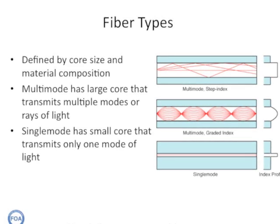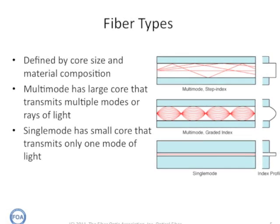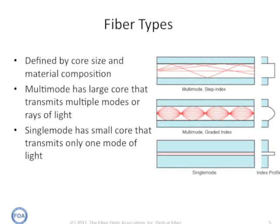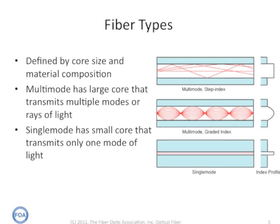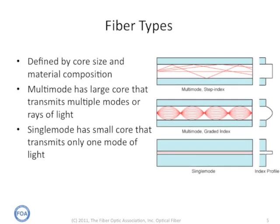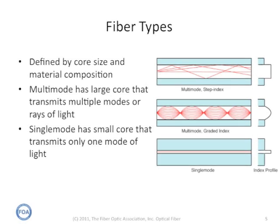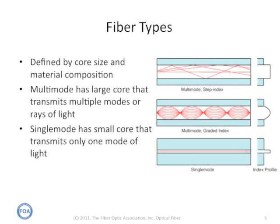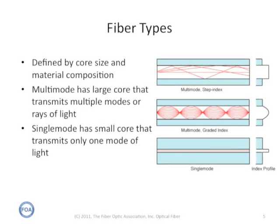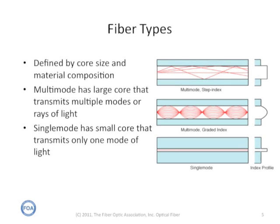We divide fibers into two types: multi-mode and single-mode. Multi-mode fiber has a large core that supports multiple rays, or modes, of light, whereas single-mode fiber has a very small core and supports only one mode of light. Because of the different modes supported in multi-mode fiber, it tends to have higher attenuation and lower bandwidth than single-mode fiber. Multi-mode fiber is typically used in premises applications for local area networks, data links, and security systems, whereas single-mode fiber is used for all high-speed, long-distance, outside plant applications.